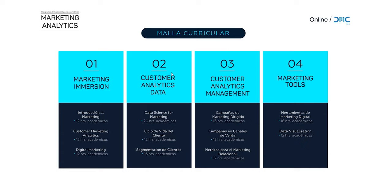Pasamos al área de conocimiento número dos, nuestro segundo eje transversal: el Customer Analytics Data. Aquí ya empezamos a trabajar con data. Arrancamos con Data Science for Marketing, donde vamos a entrar no solo a la parte conceptual para conocer qué es la ciencia de datos, sino al ejercicio propio y a la práctica de la ciencia de datos.